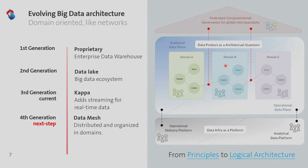Talking about data, the first generation was proprietary: you go to a vendor and they provide the whole solution. Then we said let's put all the data in one single place — our data lake. Then batch was cool but real time is better, so we moved to kappa architecture. Now we have tens of teams and thousands of data sources. We don't know anymore who is using what, there is no clear interface between multiple data sources. It's a magnificent data lake with all the data in, but it's cumbersome to manage. So now where we are going is data mesh.